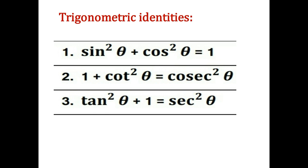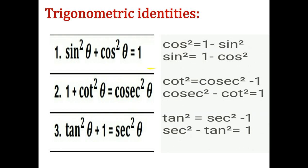Trigonometric Identities: The first identity is sin²θ + cos²θ = 1. From this, cos²θ = 1 − sin²θ, and sin²θ = 1 − cos²θ.